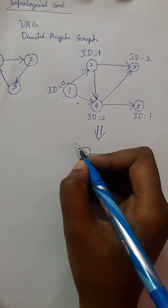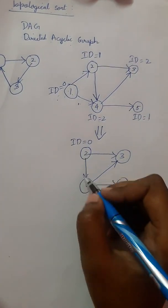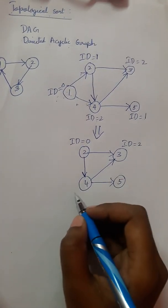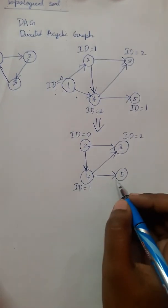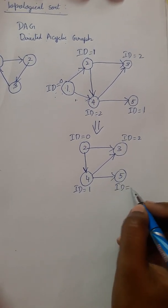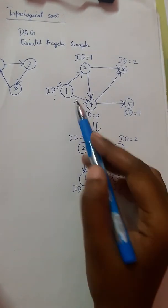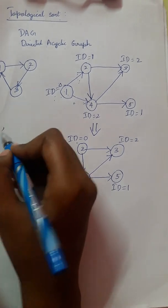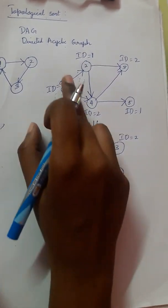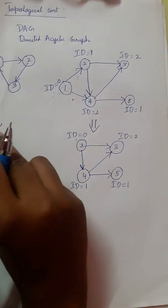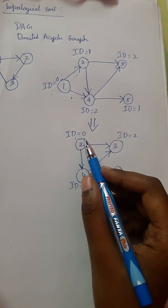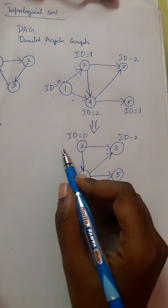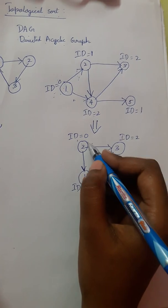After removing node 1: in-degree of 2 is 0, in-degree of 3 is 2, in-degree of 4 is 1, in-degree of 5 is 1. In step 1 we wrote '1'. Now node 2 has the minimum in-degree of 0, so we eliminate node 2 next.